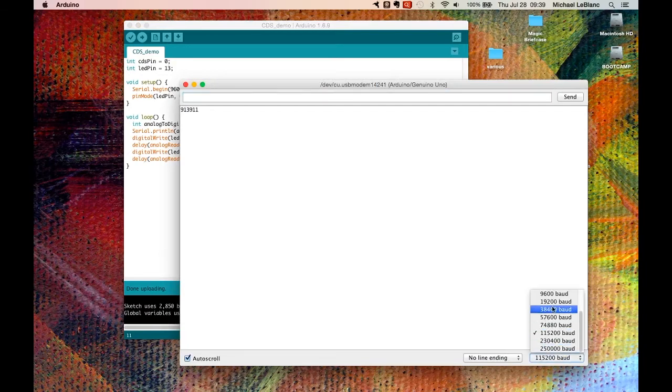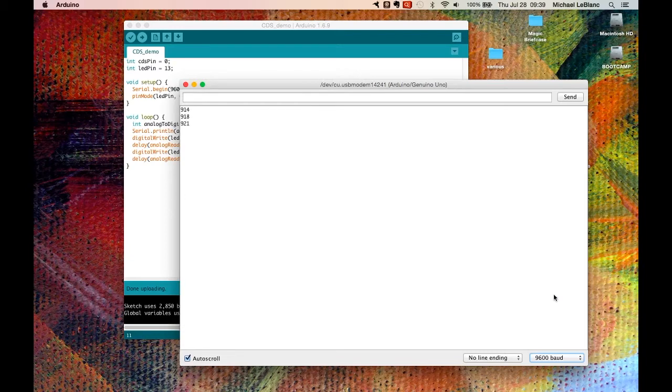to change the baud rate to 9600. Okay so it's currently reading a number of around 900. I'm going to put my hand over the sensor now and it's now giving us four hundreds and I've taken my hand off and I'm going to shine a flashlight on it see if we can get it higher than 900 there's 1,000